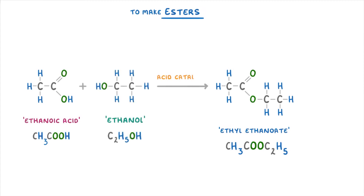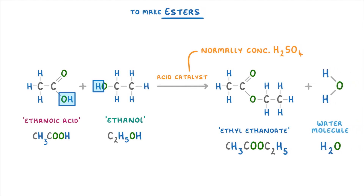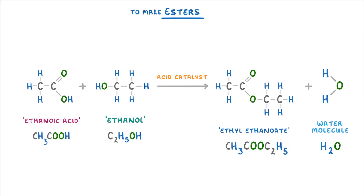We also need an acid catalyst to speed up the reaction, and we normally use concentrated sulfuric acid. When they combine, the carboxylic acid loses its OH group and the alcohol loses the hydrogen from its OH group, and together these three atoms form a water molecule, which we can call the byproduct of the reaction.